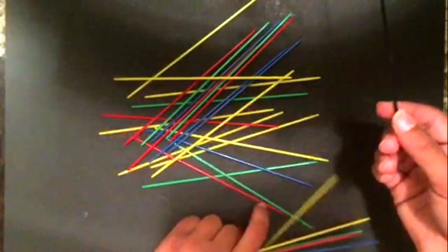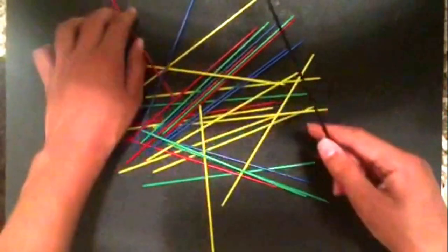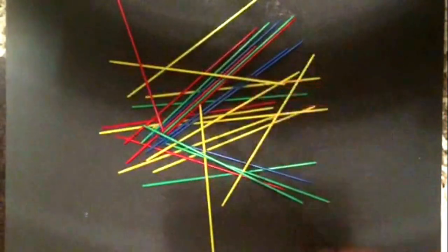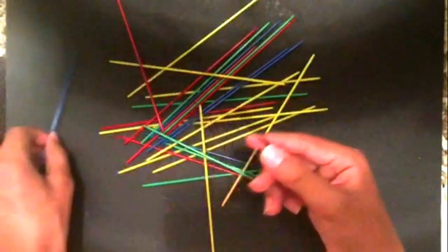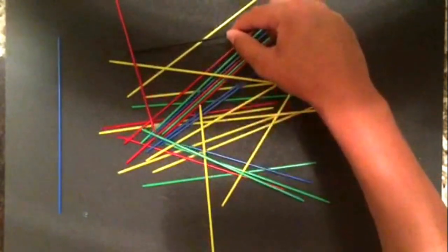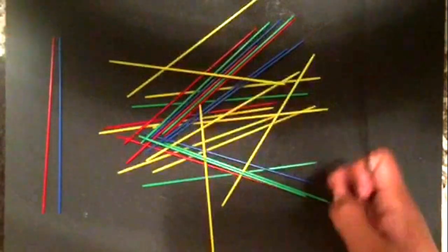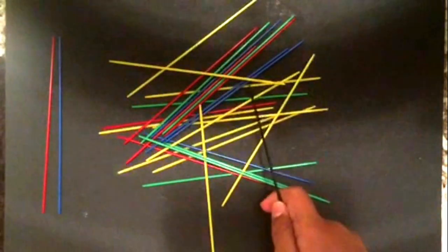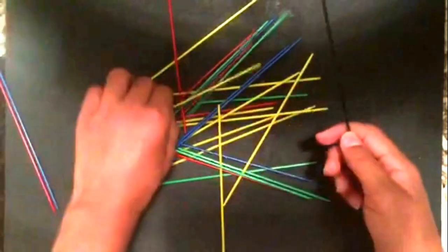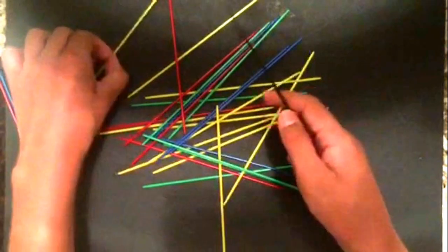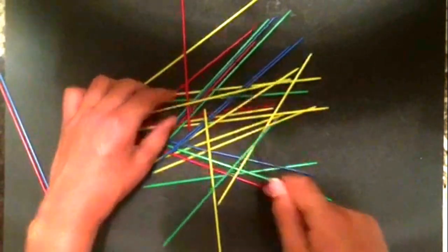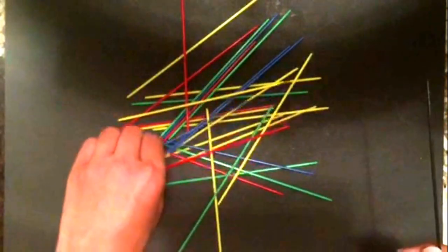Okay so if I try to pick up this I get 100 points. Now this keeps on continuing until I move another stick. So I just moved another stick when I was trying to pick up this so that means my turn's over.